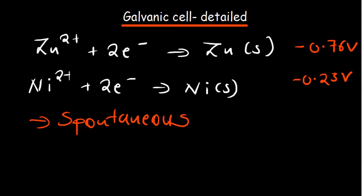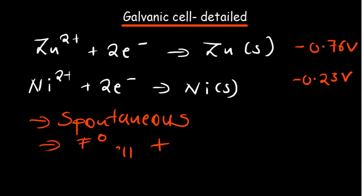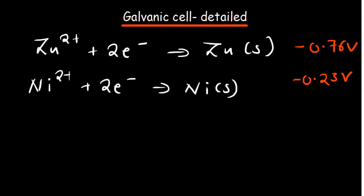Electrons will be able to move on their own from one reactant to the other in a redox reaction. For a spontaneous reaction, the standard cell potential is going to be positive and the Gibbs free energy is going to be negative. These are the things we need to understand for a galvanic cell. Before we can move further, we need to understand how we calculate what we call the standard cell potential.